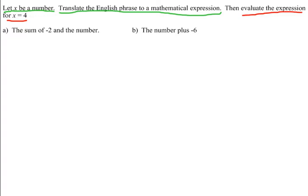And so each one of these two examples, we're going to have to do a couple of different things. So let's do the first thing, translate the English phrase to a mathematical expression. So in this first problem, the sum of negative 2 and the number.